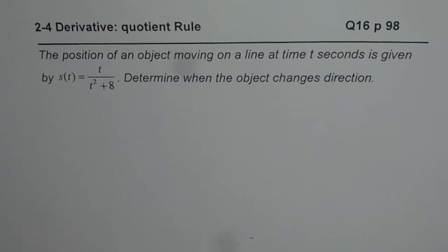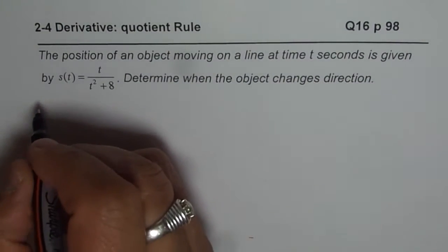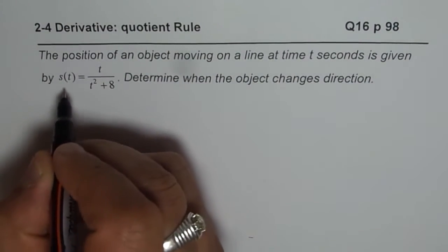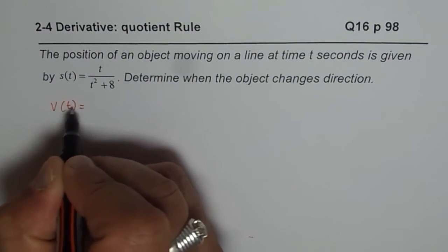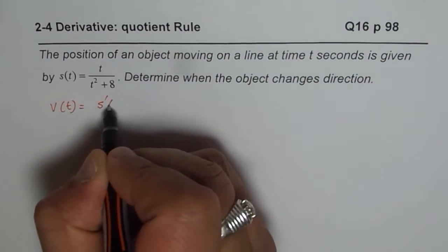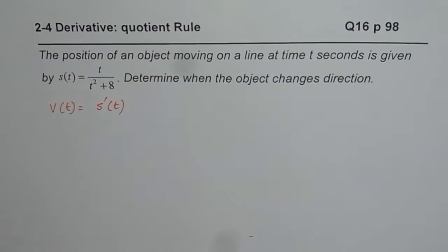Determine when the object changes direction. The key thing to understand here is that we are given displacement. So, displacement derivative is velocity. To find velocity at any instance of time, we need to find derivative of displacement.